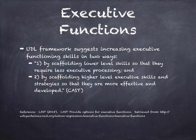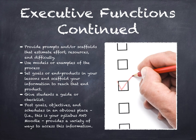So, executive functions. UDL frameworks suggest increasing executive functioning skills in two ways: first, by scaffolding the lower level skills so that they require less executive processing; and second, scaffolding higher level executive skills and strategies so they're more effective and developed. The photo of a person marking a check mark in a box reminds us to give students a guide or checklist of what to expect — the steps needed to do X, Y, Z — by posting goals and objectives and schedules, as well as an estimate of time, energy, resources, and difficulty.